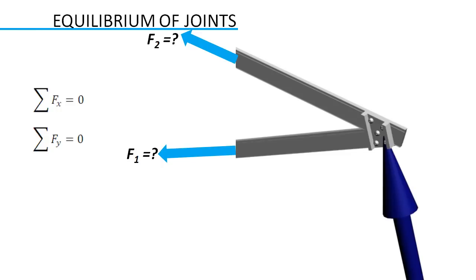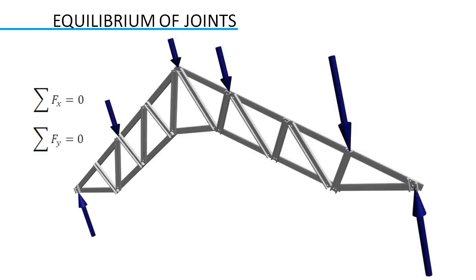Once you are done with one joint, you can move to the next joint and do the same analysis there. The procedure is repeated till we have solved all the unknown forces in truss.